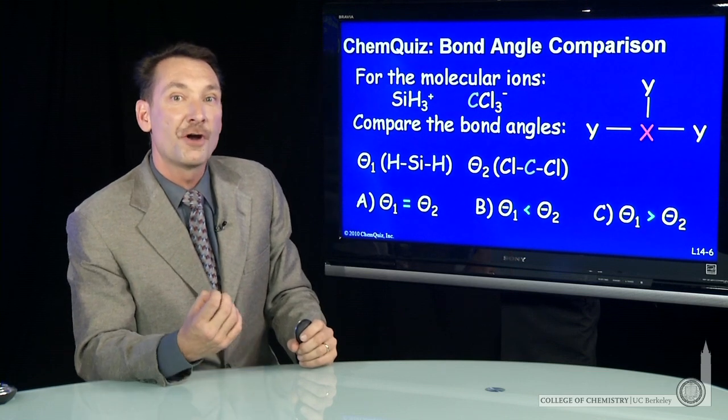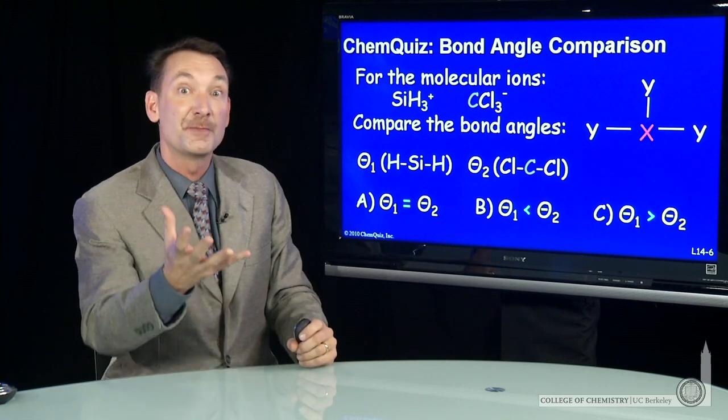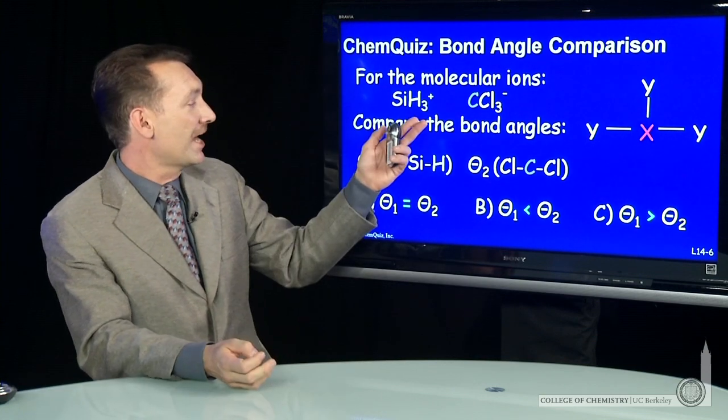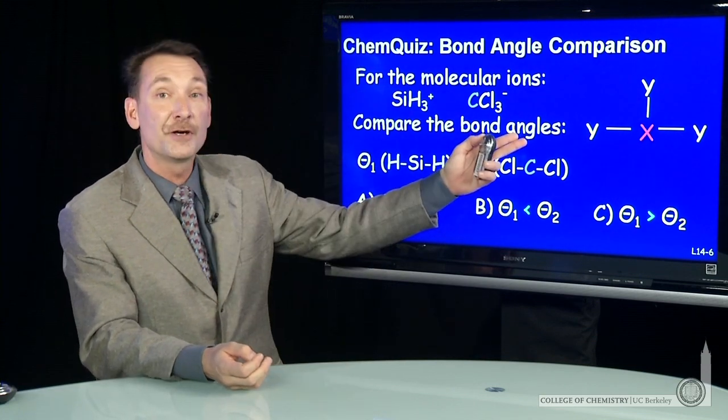When we draw the Lewis electron dot structures, we'll be able to determine bond angles from our VSEPR arrangements. The question I have is, what is the bigger bond angle?